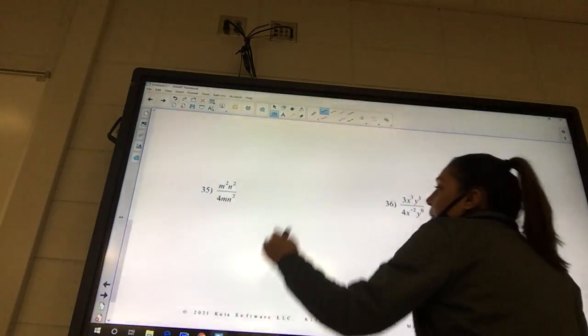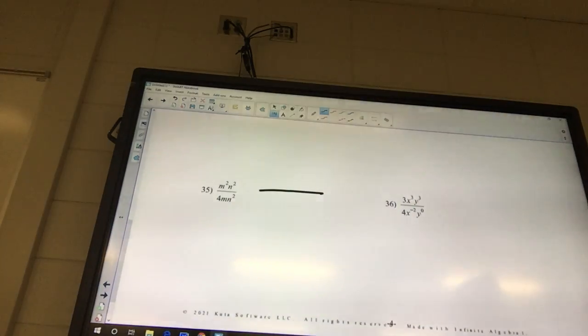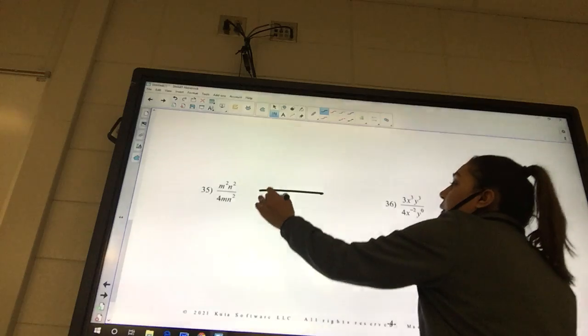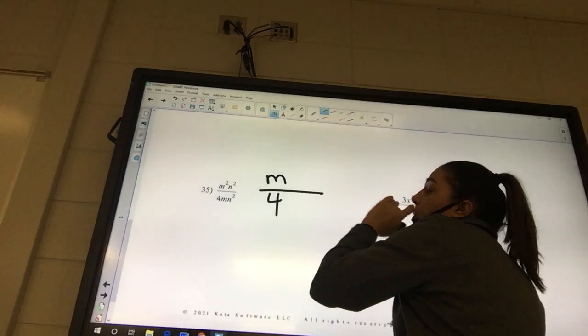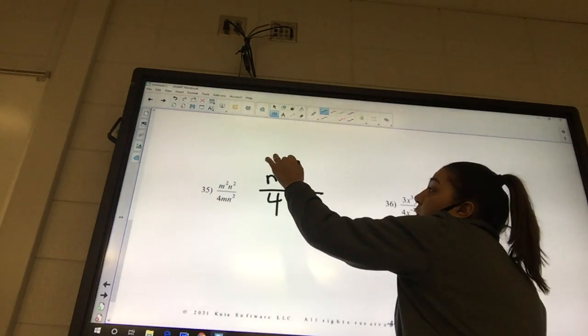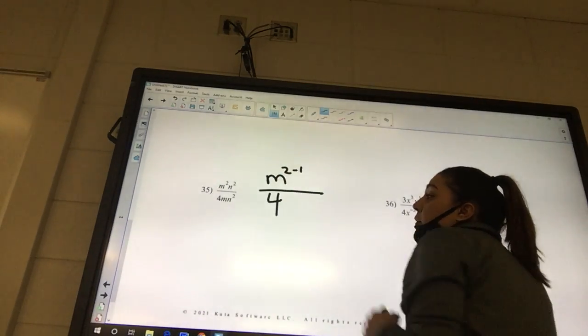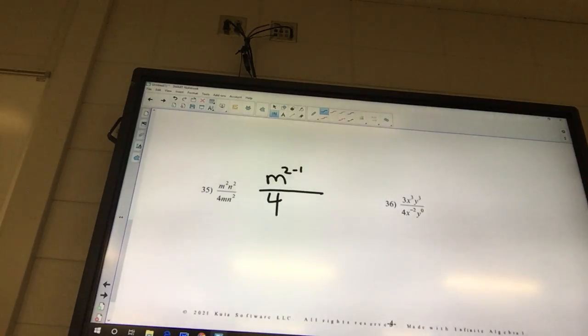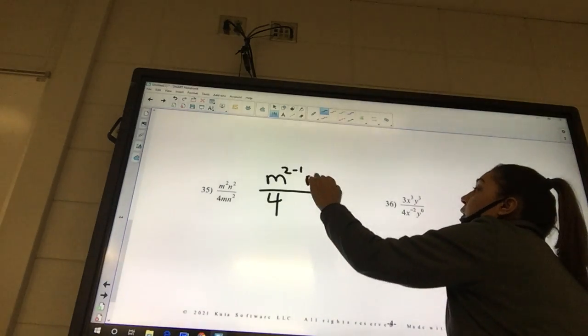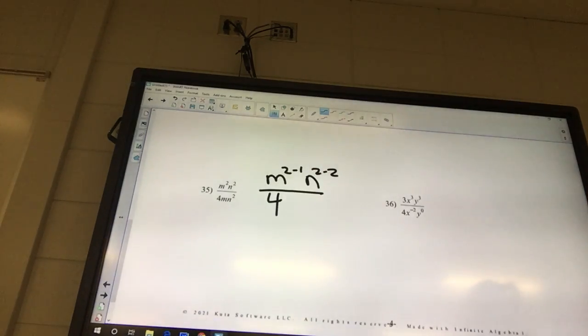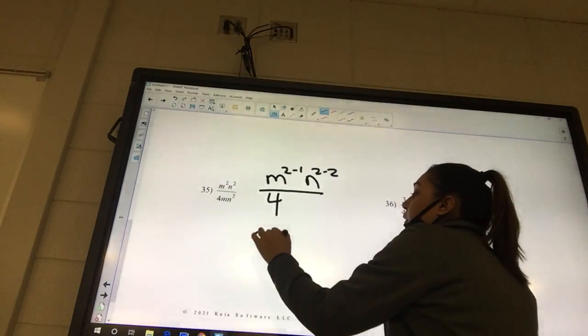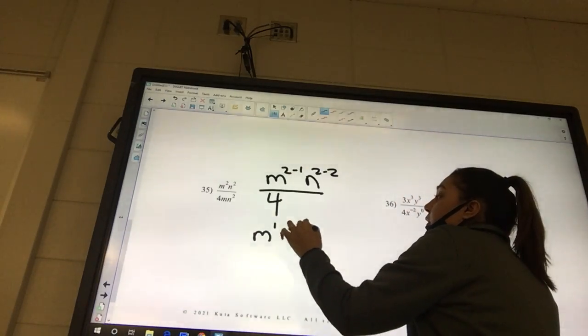Okay, look at 35. Draw your bar. Where do big numbers go? On division, we leave them where they're at. So is that 1 on the top or is it on the bottom? On the bottom. We're going to leave it there. The m, it's going to be m to the 2 minus 1, top minus bottom. And you're going to have n to the 2 minus 2. What's 2 minus 1? 1. And then n to the 0.